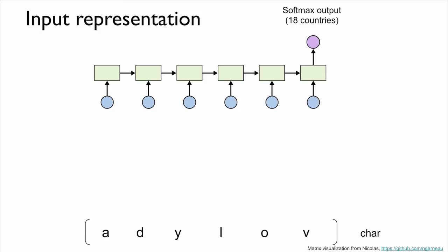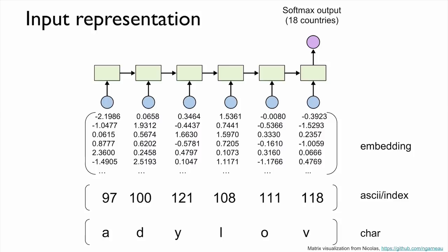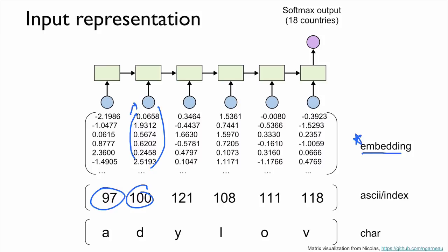The output of the embedding will eventually be used as input for the RNN. For example, if our name is 'Adelove', we divide each character, identify the ASCII numbers for each character, use them as an index, and look them up in the embedding table. For example, index 97 gives us certain numbers from the lookup table. Of course, these embedding values are trainable and will also be updated during backpropagation.